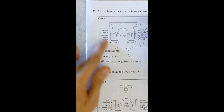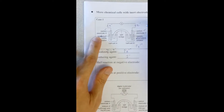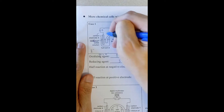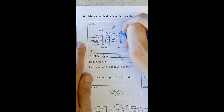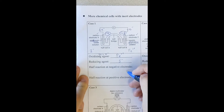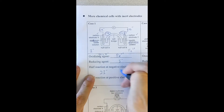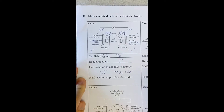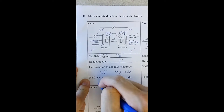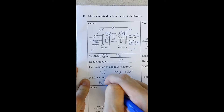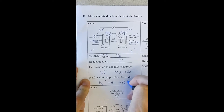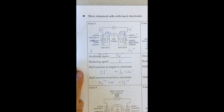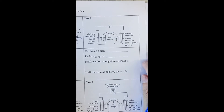At the negative electrode, two iodide ions lose electrons to form iodine and two electrons. At the positive electrode, the iron(III) ion receives electrons to form iron(II) ion.